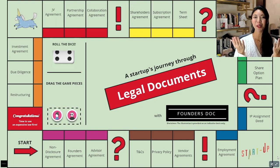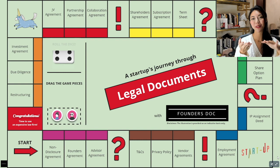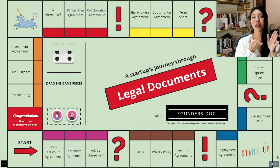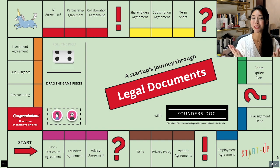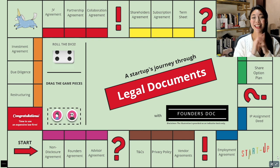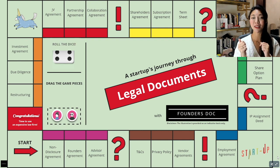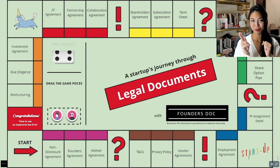Hey guys, welcome back to Founders.gov. Previously we covered the pink category of documents and today we're going to cover the brown category of documents, which relate to the regulation of your business risk as your startup grows. In this video we'll be covering three documents: first the terms and conditions, second the privacy policy, and third the vendor agreements.